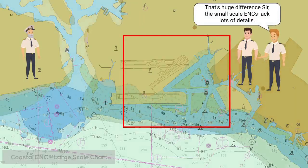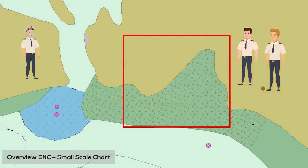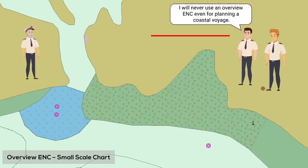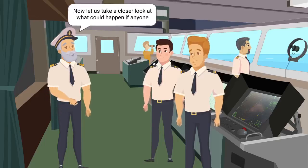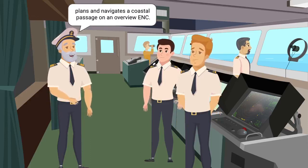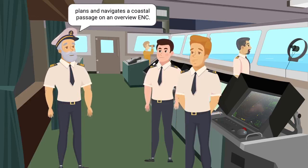That's a huge difference, sir. The small-scale ENC lacks lots of details. I will never use an overview ENC, even for planning a coastal voyage. Now, let us take a closer look at what could happen if anyone plans and navigates a coastal passage on an overview ENC.